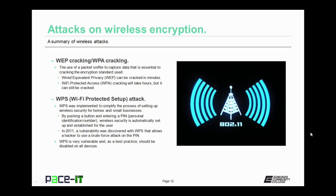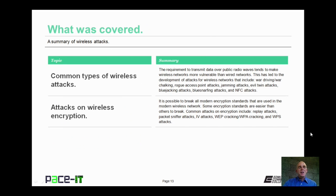Finally, there's the WPS attack, or Wi-Fi Protected Setup attack. WPS was implemented to simplify the process of setting up wireless security for homes and small businesses. By pushing a button and entering a PIN — that's a personal identification number — on a device, wireless security is automatically set up and established for the user. But in 2011, a vulnerability was discovered with WPS that allows a hacker to use a brute force attack on the PIN and have that attack succeed. You would think that since it was discovered in 2011 it would have been patched by now, but it has not. Therefore, WPS is very vulnerable and as a best practice should be disabled on all devices.